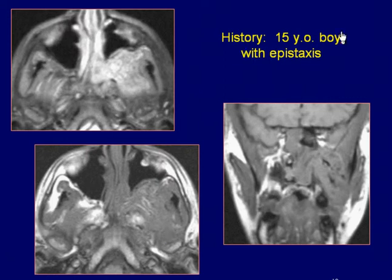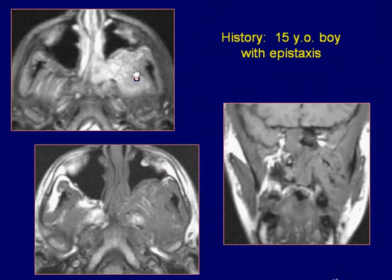A 15-year-old boy with epistaxis. Axial T2 fast spin-echo image of the face revealed a slightly heterogeneous high-signal mass involving the left masticator space and left side of the nasopharynx. There is widening of the left pterygopalatine fossa and anterior bowing of the posterior wall of